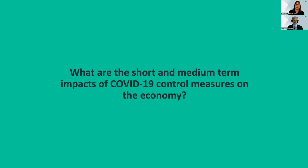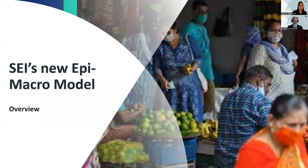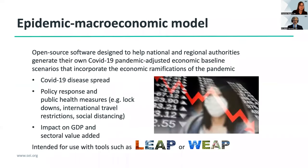The question of what exactly the short and medium-term impacts of COVID-19 control measures on the economy were came up over and over again, and is one that is really important in order to carry out successful planning exercises. So at SEI we developed the new EPI Macro Model. EPI Macro stands for Epidemic Macroeconomic Model — it's open-source software designed to help national and regional authorities generate their own COVID-19 pandemic-adjusted economic baseline scenarios that incorporate the economic ramifications of the pandemic, largely incurred through the implementation of public health measures.